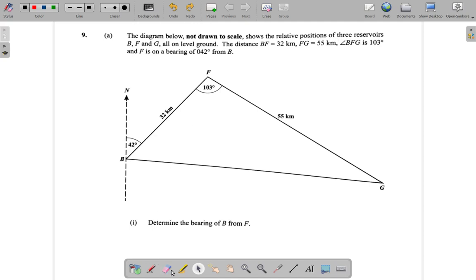B, F and G. So you have B here, F here, and G here. Okay. It says all on ground level. Okay, so it's like you're in a helicopter looking down on them.